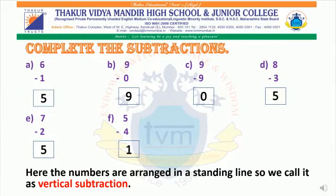Here the numbers are arranged in a standing line, so we call it vertical subtraction.